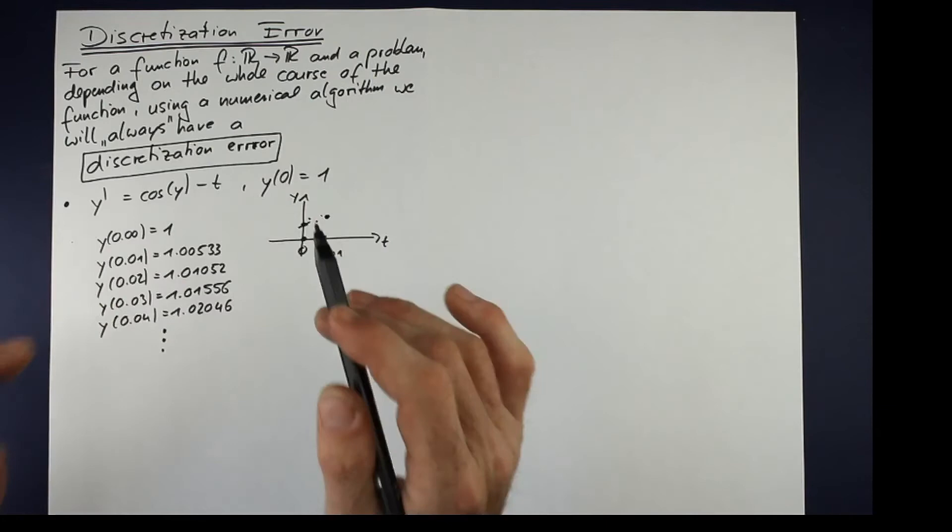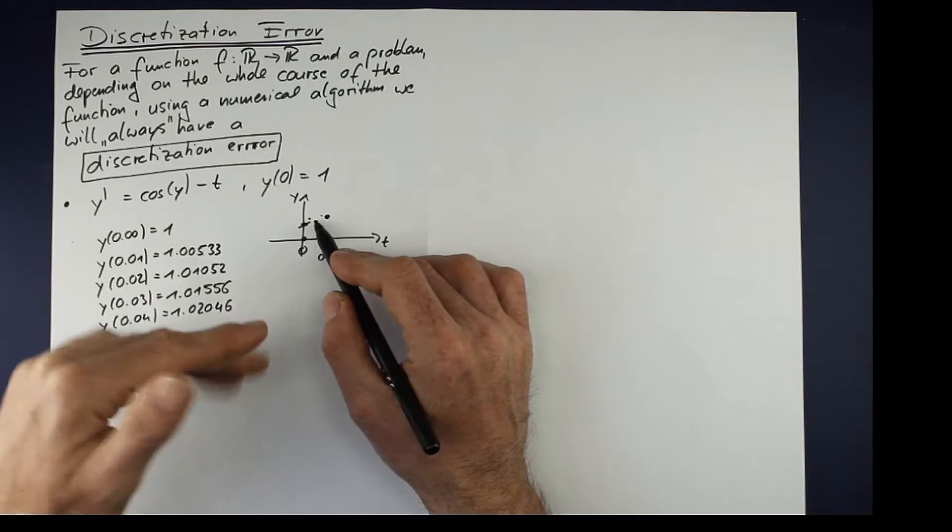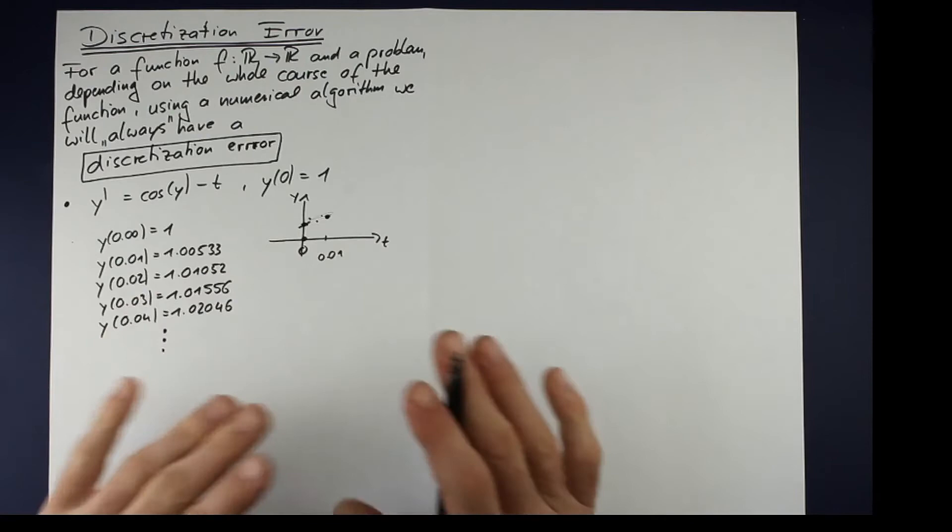This comes from the discretization here, but better said, it comes from the discretization here. We can evaluate the function f at some specific points, but not on the whole part here. And so there will be an error.